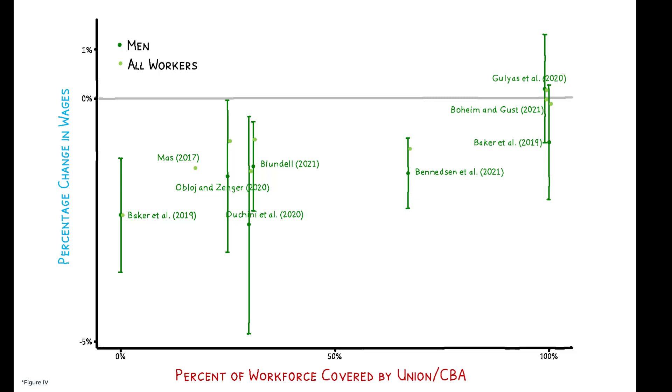First, the observations generally fall below the x-axis. Across a variety of different settings, transparency consistently has a negative impact on wages. Second, this estimated relationship is upward-sloping. This indicates that the effect of transparency on wages is mitigated as a higher and higher share of the workforce is covered by collective bargaining.